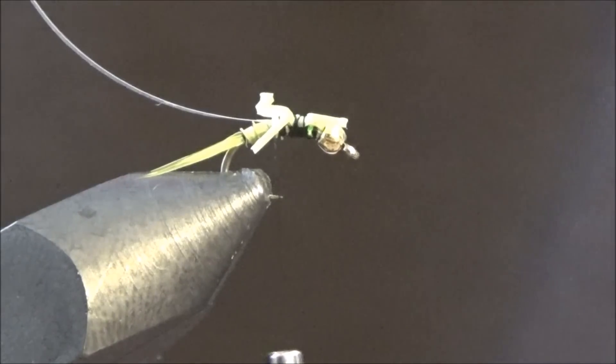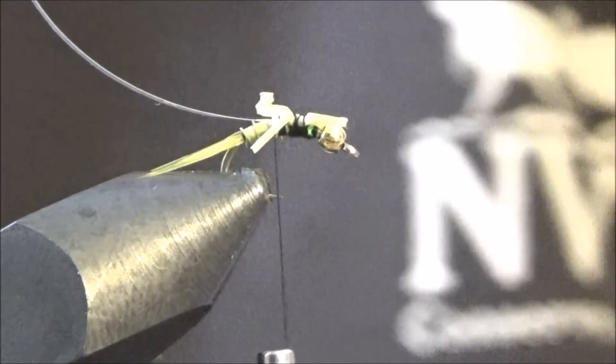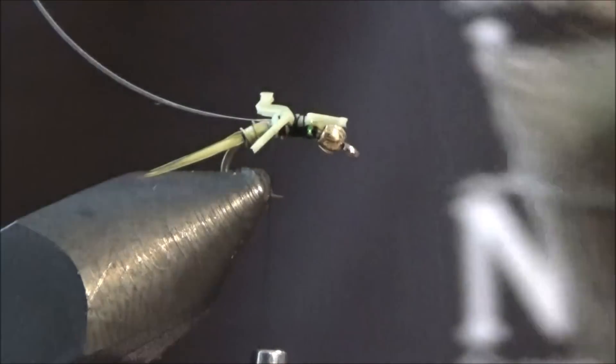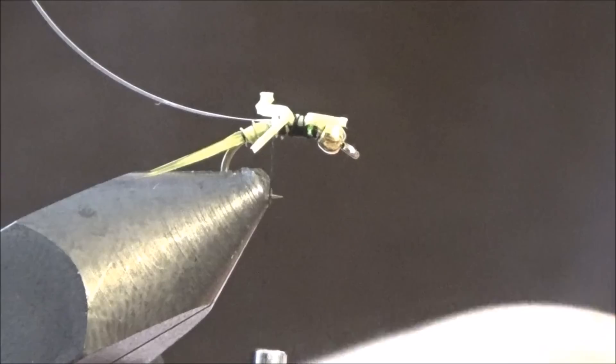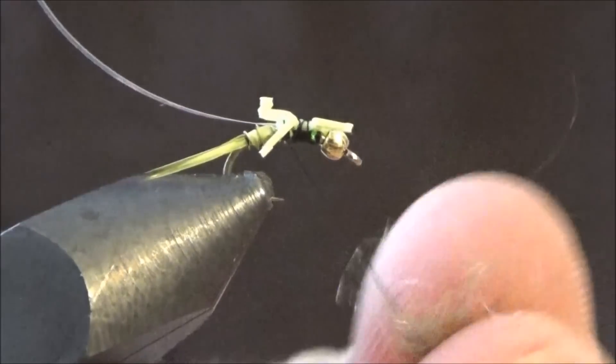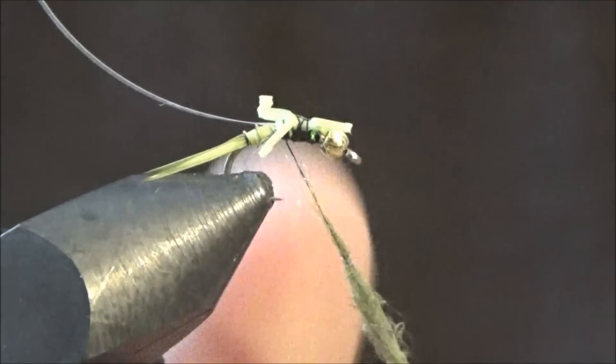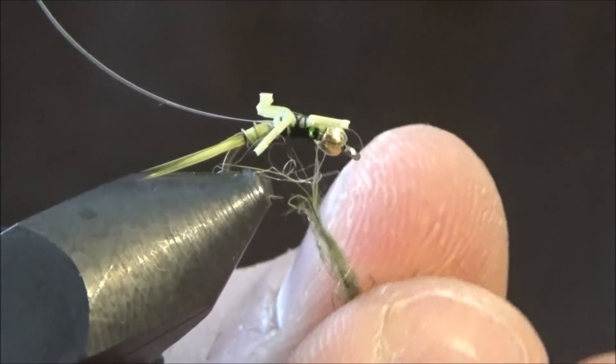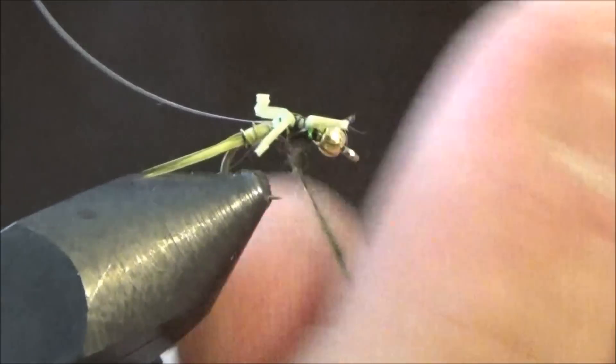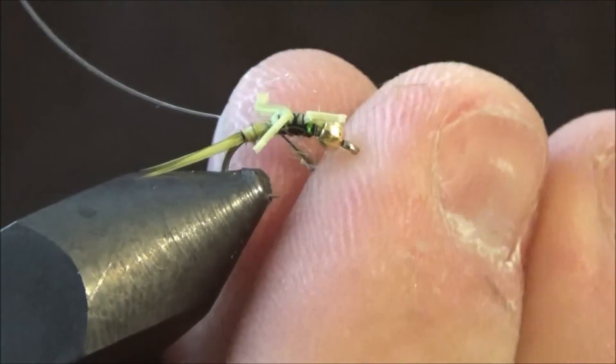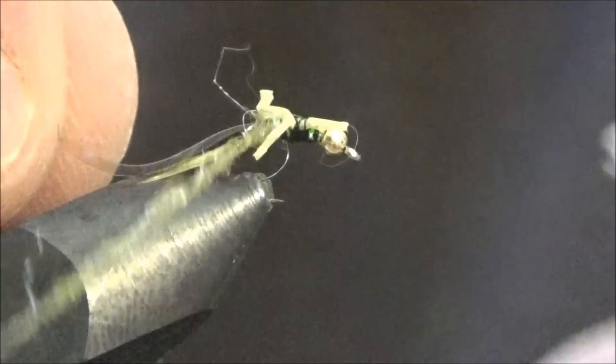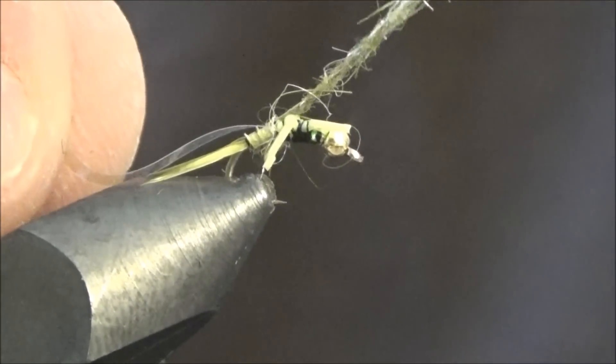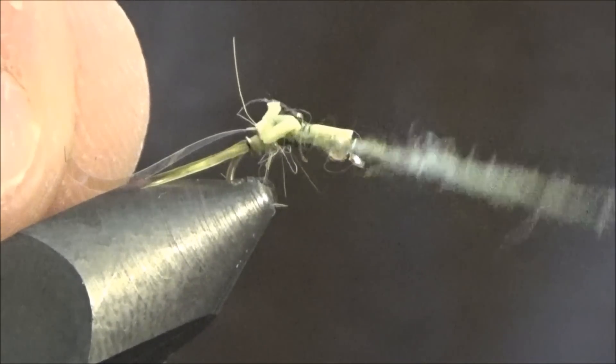Okay, now you take your dubbing. I am using Hare's Ear Plus dark olive. You can use any variation of olive. I'm going to dub your thread there. I like to dub it pretty thin. You can always add more. I like to get that real thin little piece of dubbing, a little layer right behind that first set of legs. Just a couple wraps.